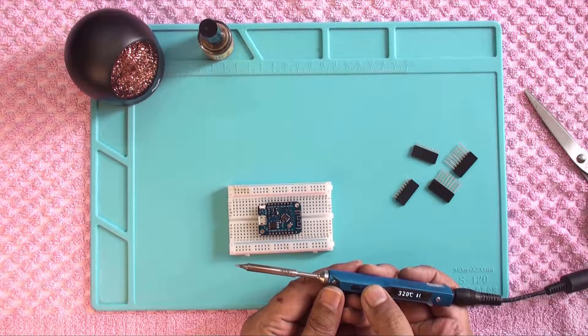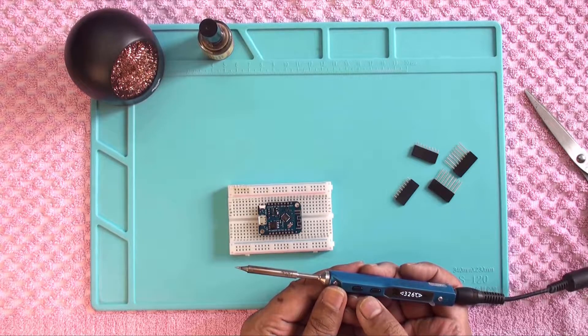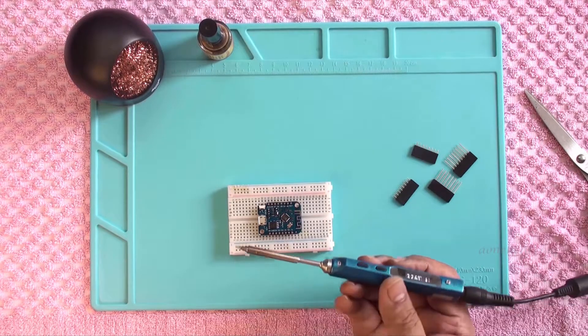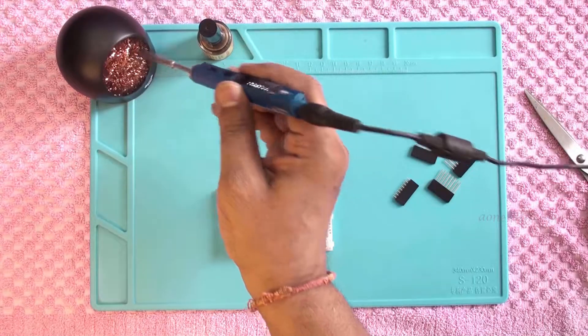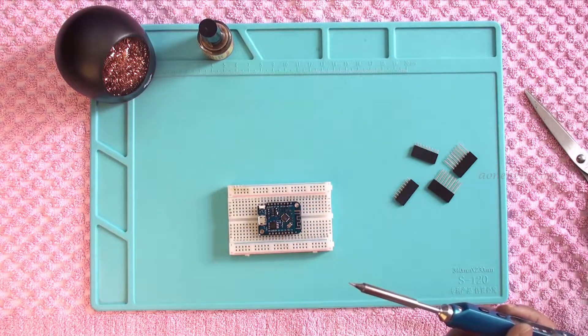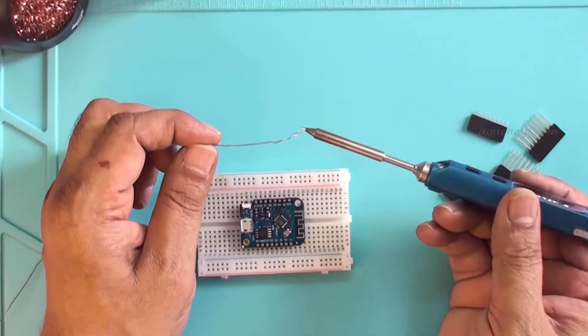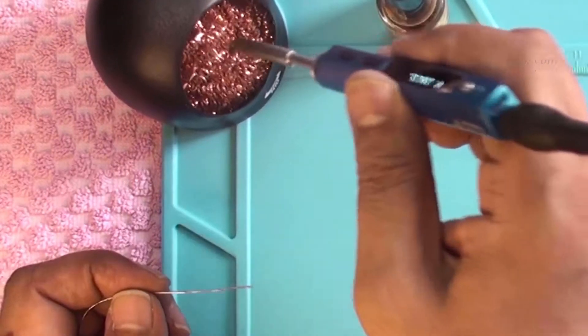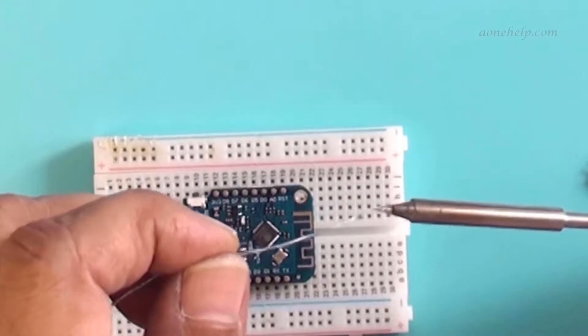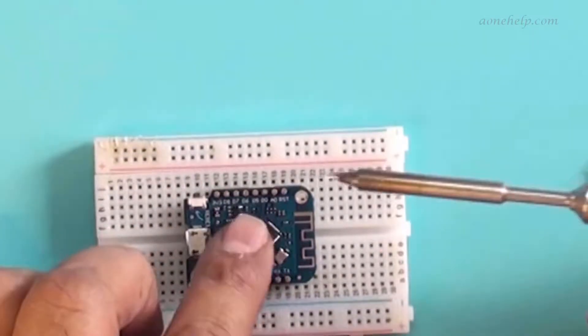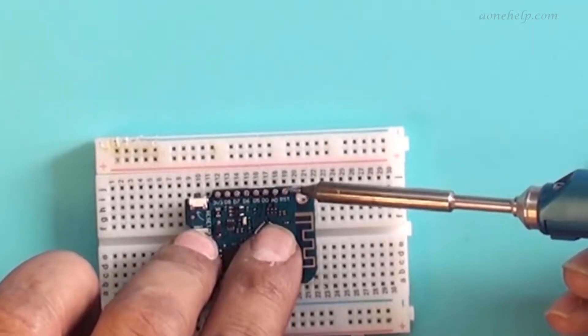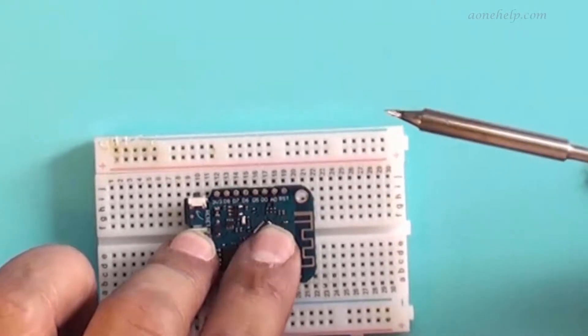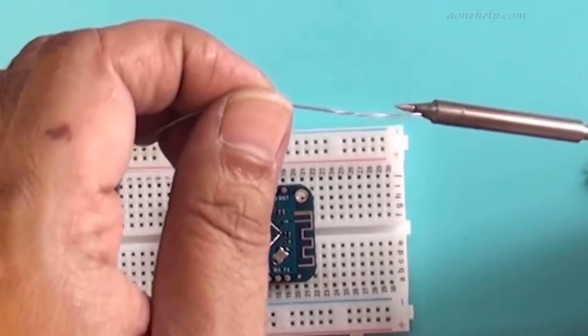We are using a pointed conical pencil bit since the pins we are going to solder are closely placed. If we use a normal bit, there are more chances of bridge formation during soldering. Let's clean the soldering tip by re-tinning. Let's put some solder on the tip and solder any one of the corner pins. Remember, during soldering we should gently press the module with one hand so that there is no gap between the module and headers and also the headers are at right angle with the module.